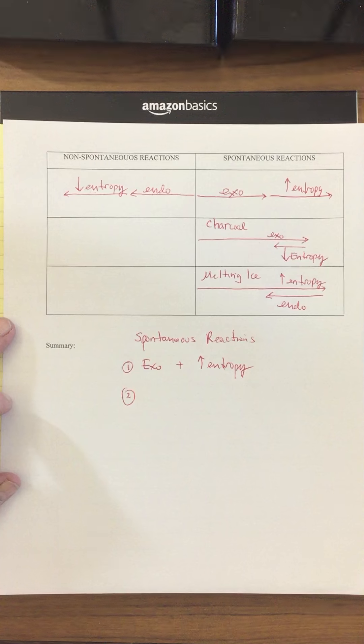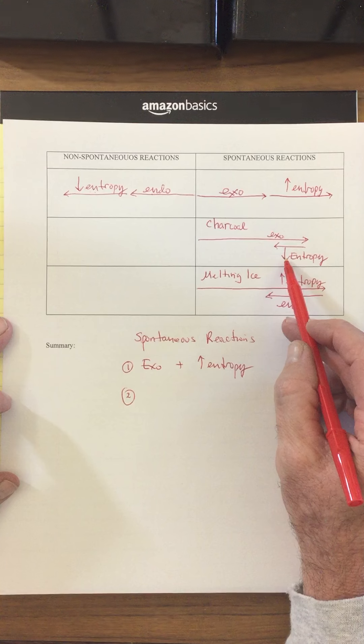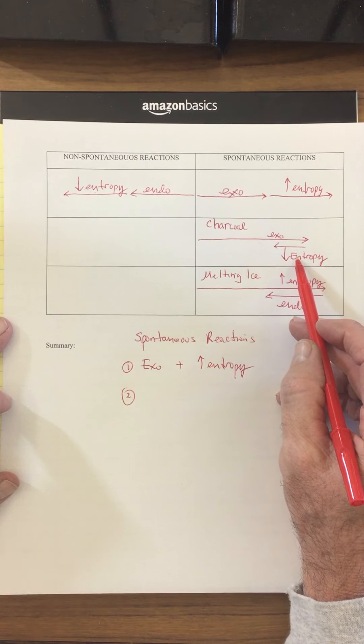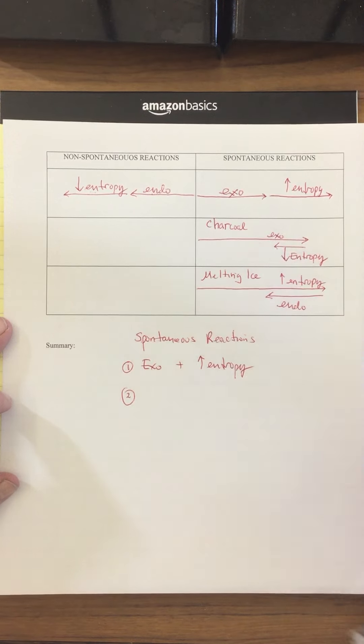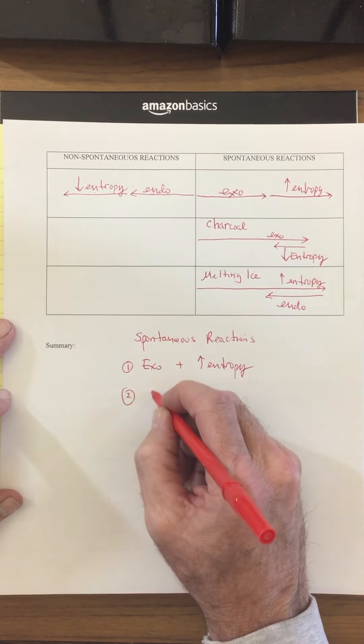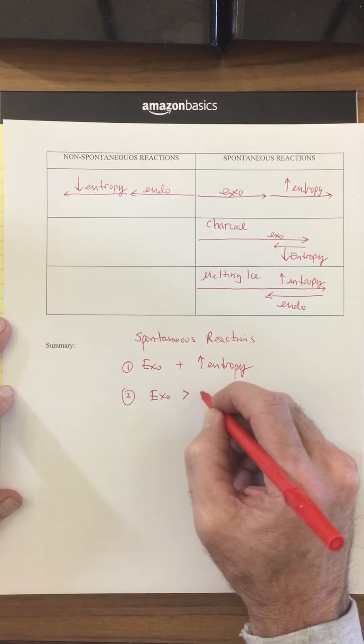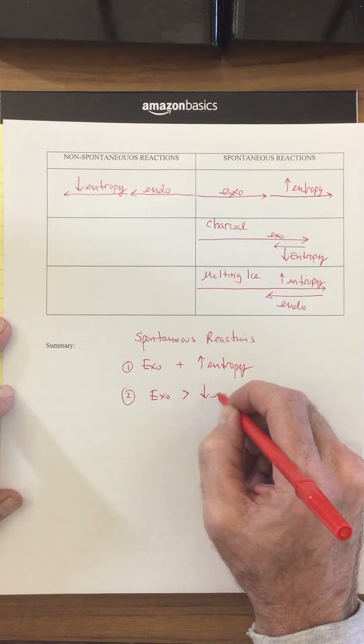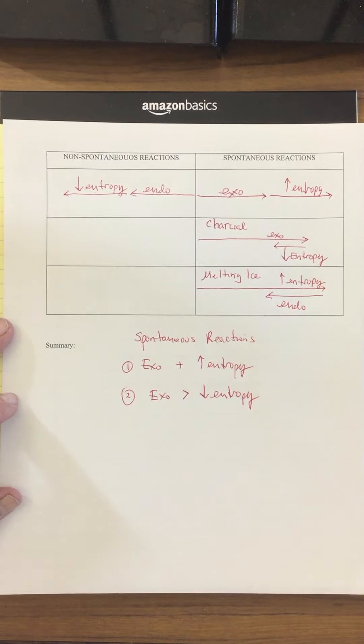Second scenario, you could have a decrease in entropy, meaning you're producing stable molecules with more structure, but they have to be highly exothermic. This has to exceed this. So if you have your exothermic nature of the reaction that exceeds the decrease in entropy, your reaction will still be spontaneous.